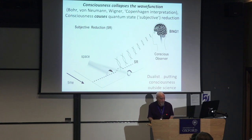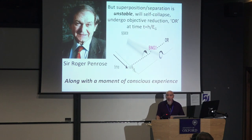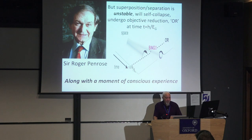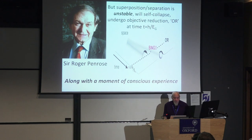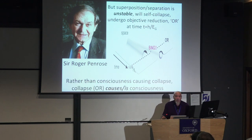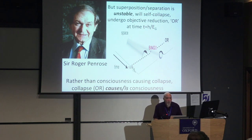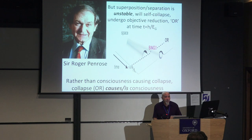Roger suggested something different: that this superposition separation is unstable and will self-collapse or undergo objective reduction, OR, due to an objective threshold at a time T equal to H-bar over E-sub-G, E-sub-G being the gravitational self-energy. And when that occurs, there is a moment of conscious experience. Rather than consciousness causing collapse, Roger turned it around 180 degrees and said that collapse or OR causes or is consciousness. As far as I know, this is the only mechanism for consciousness ever put forth. IIT is a correlation, phi is a correlation. This is the only mechanism based on physics and science.